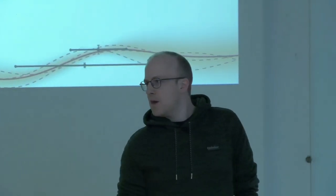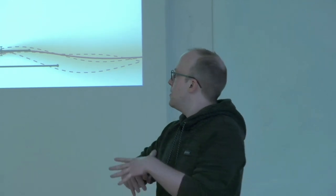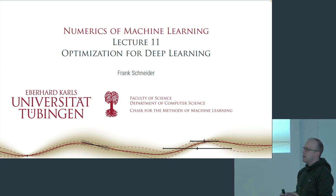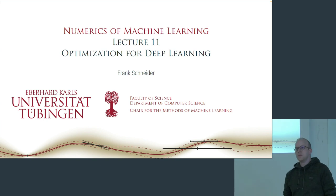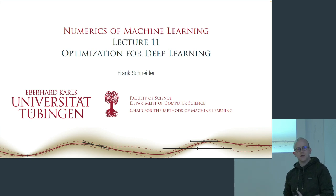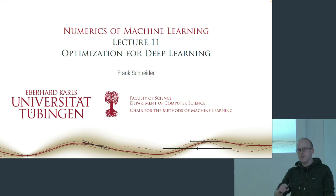Hello everyone. Today's lecture is about optimization for deep learning. I'm Frank Schneider. Today's lecture will be more of an overview on training neural networks — why it's hard, what we should do about it. Next week, Lucas is giving a talk about a specific set of methods, and after that we'll have two more lectures on deep learning adjacent topics. The third one is given by Philip, with material from Agostinos.